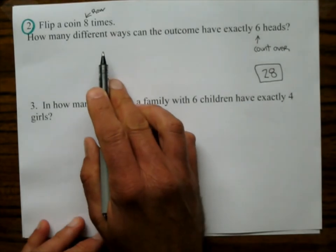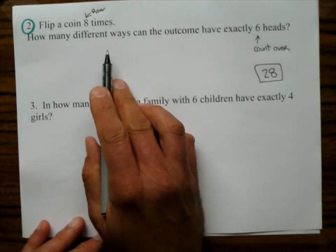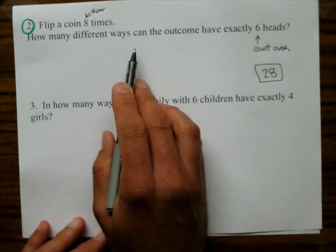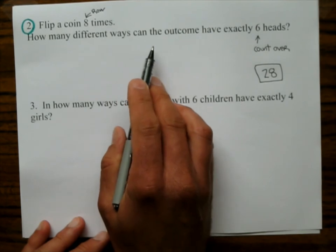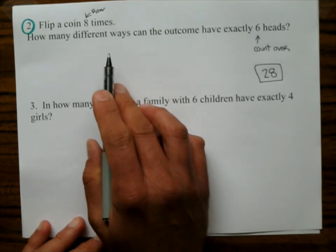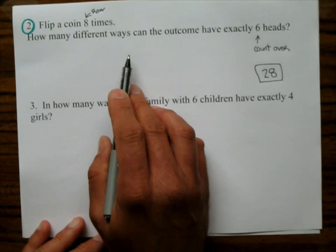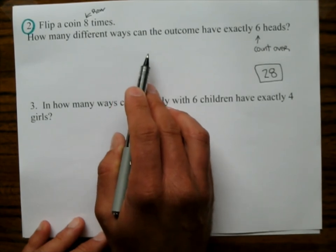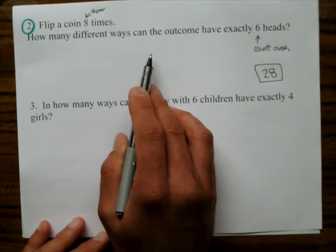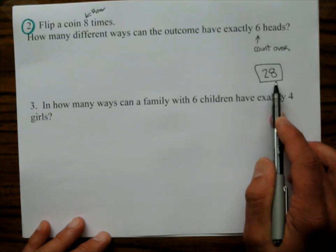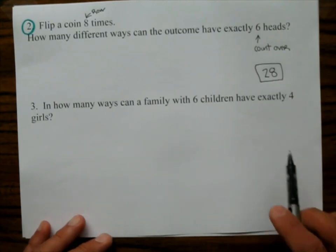And that's how you do that. Now, could we have started listing these out and go heads, heads, heads, heads, heads, heads, tails, tails? That's one way. And then you can go heads, heads, heads, heads, heads, tails, heads, tails. That's the second way. You'd have to count 28 of those. And that's not fun to do.